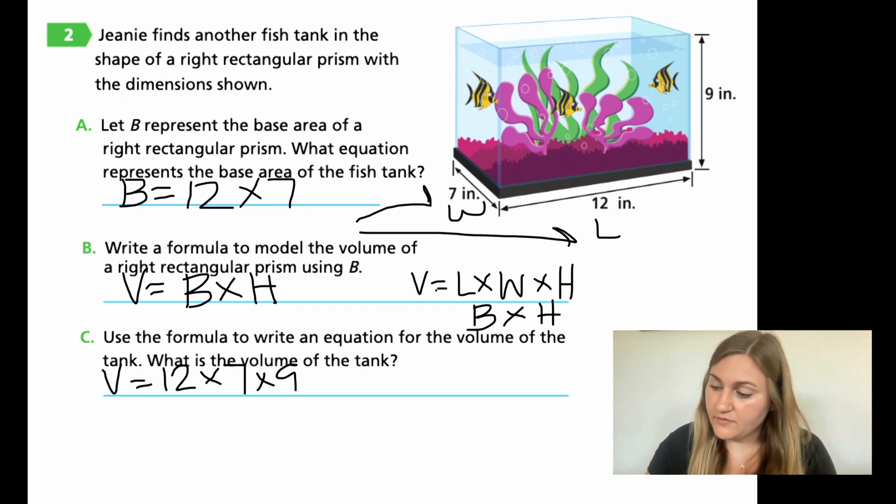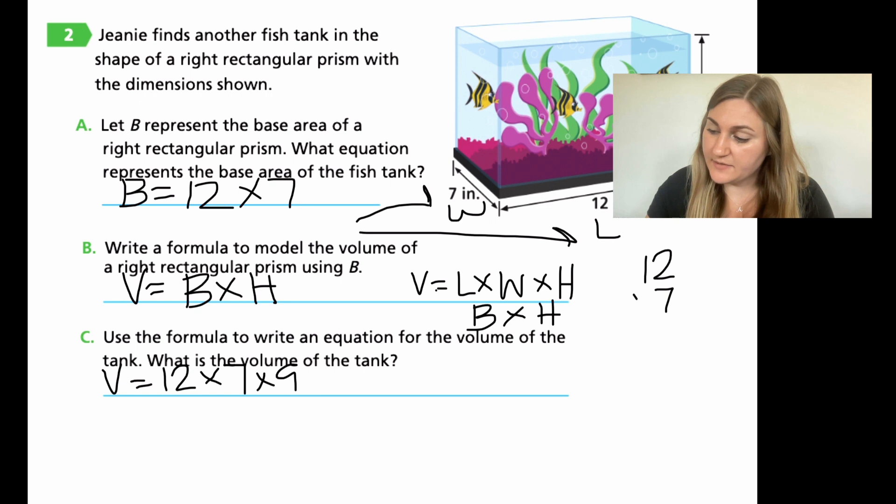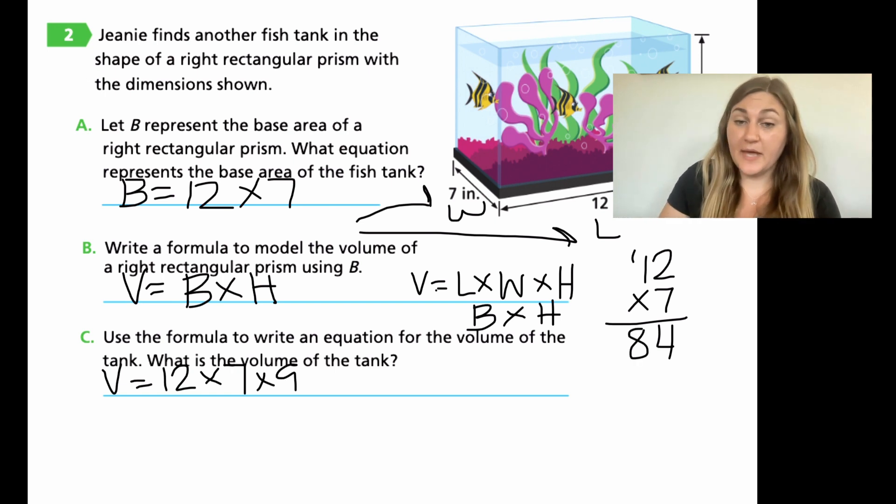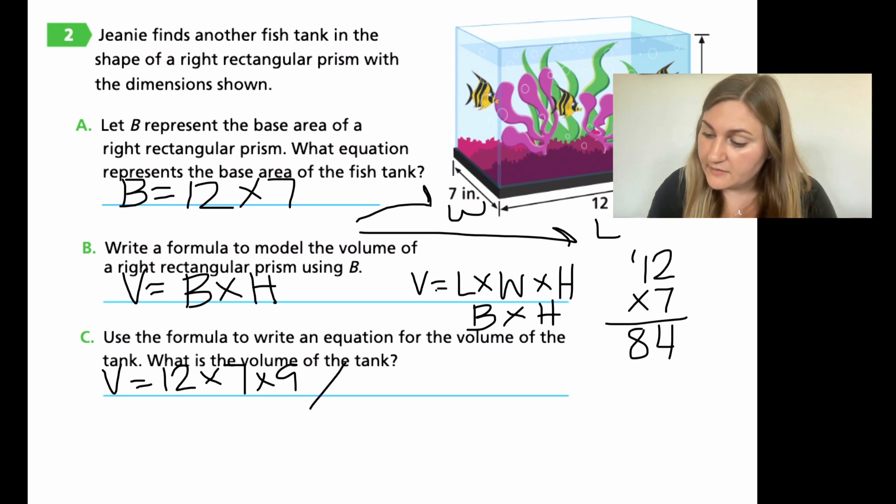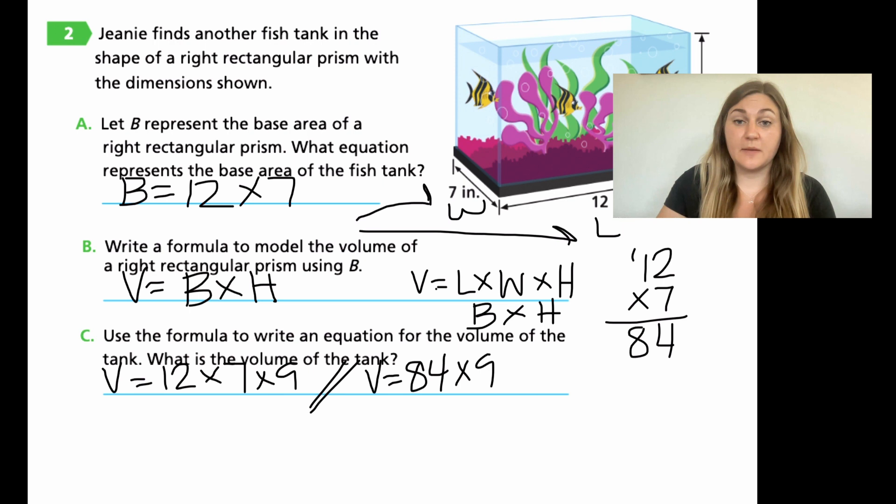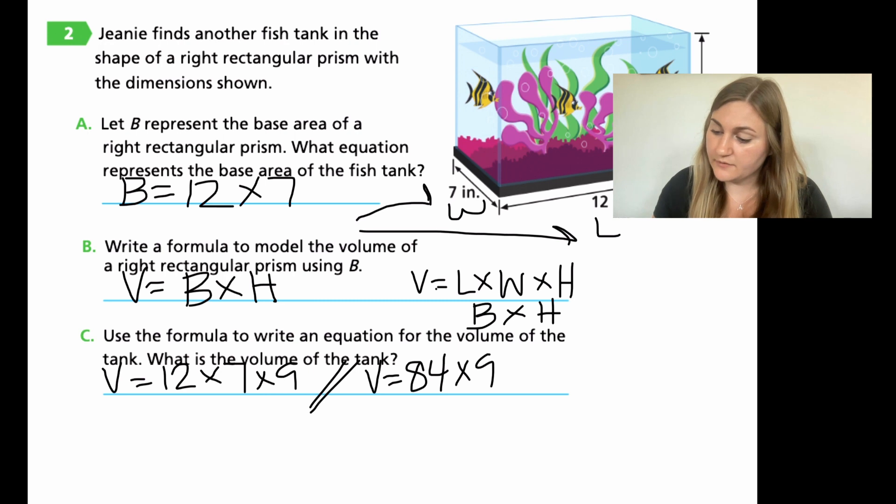So 12 times seven, I'm going to do my math over here to the side. So 12 times seven, seven times two is 14. Carry the one, seven times one is seven plus one is eight. So I know my base is 84. So I could also write it separately and I could say volume equals 84 times nine. So that's my base times my height now. Now I need to take that 84 times nine to find my total volume. So 84 times nine, four times nine is 36. Carry the three, nine times eight is 72 plus three more is 75.